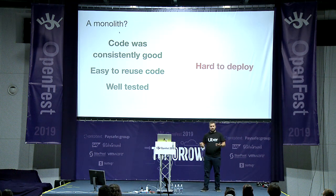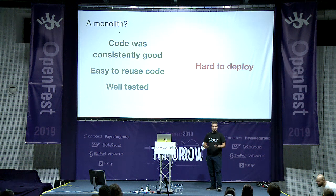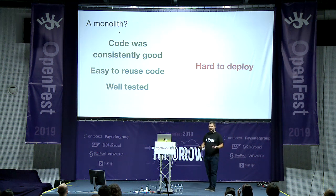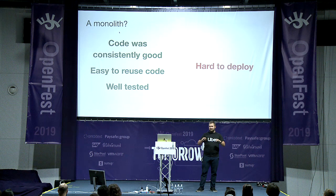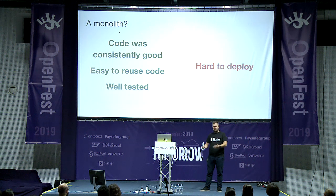The monolith is a nice thing. We had about 500 engineers contributing to this one component called the API. The code was consistently good because there were a lot of people looking at it and refactoring it. It was very easy to reuse code — you just say 'import from' and put the package name. And everything was well tested, because when you have such a big critical piece of code running your company, you write tests for it.